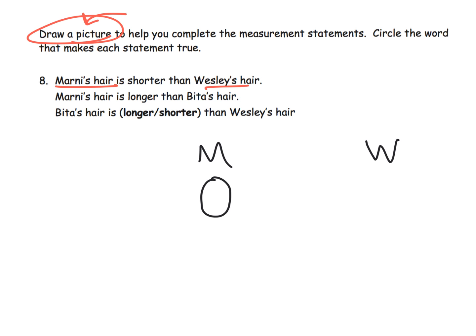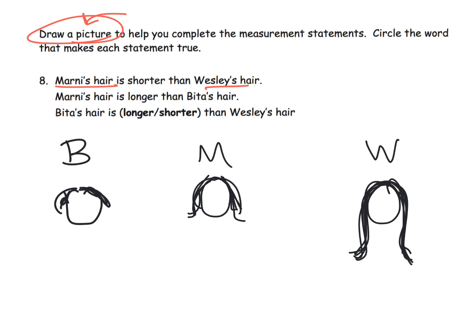I'm going to put M and W because my drawings are horrible. Here's Marnie and her hair is right here, and then Wesley. Marnie's hair is shorter than Wesley's hair so that means Wesley's hair is very long. There we go, we have Marnie and we have Wesley. I've just taken care of that first sentence. The second sentence says Marnie's hair is longer than Bitta's hair.